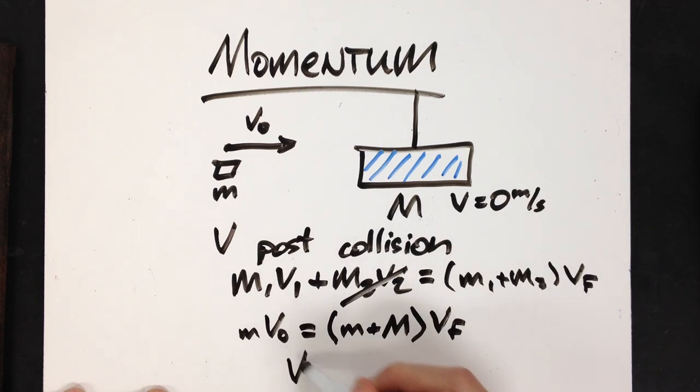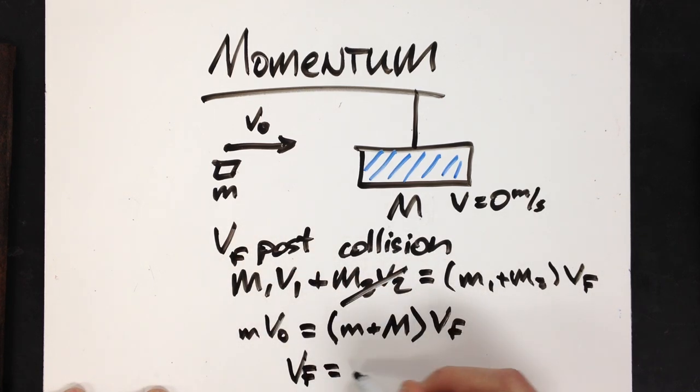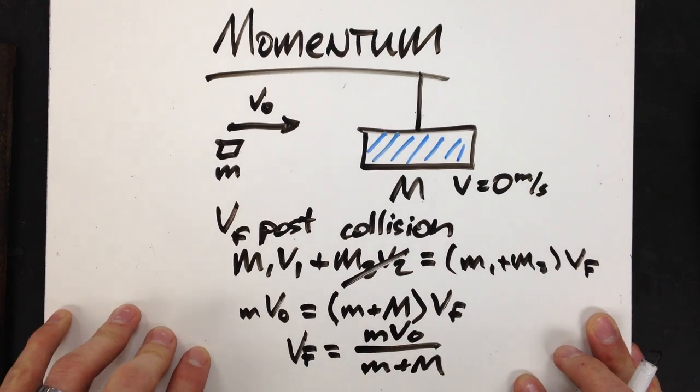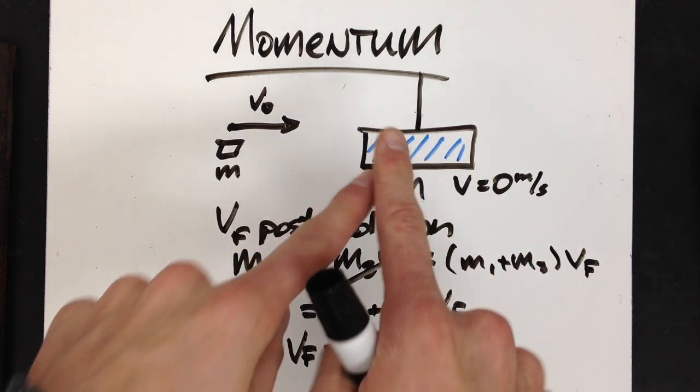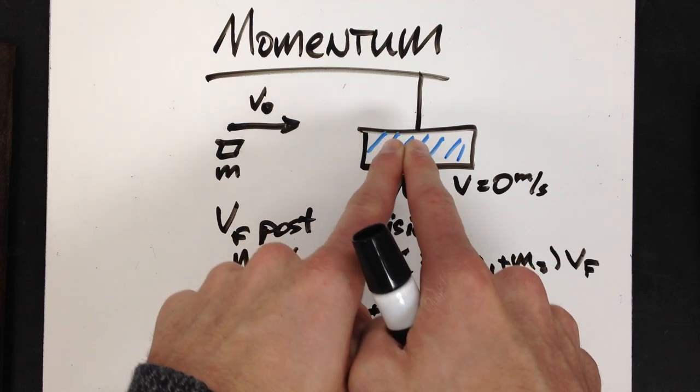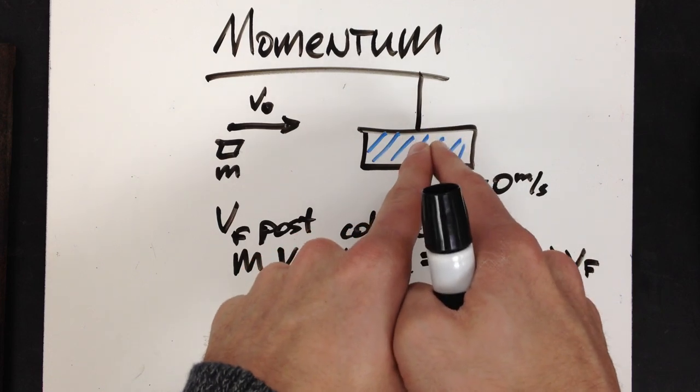So, my velocity post-collision, or v final, is going to be m v0 divided by little m plus big M. Now, that is my speed immediately after the collision. And, it's the speed of the bullet block system beginning of the swing at its lowest point.